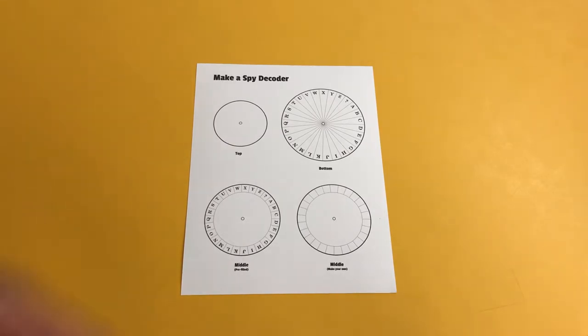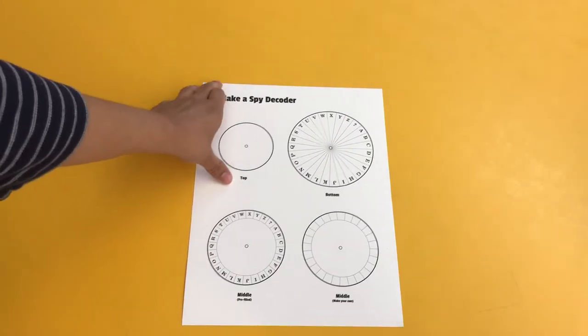To begin, download the spy decoder wheel template from our website. Now that you have the template, you can start cutting out the wheels.